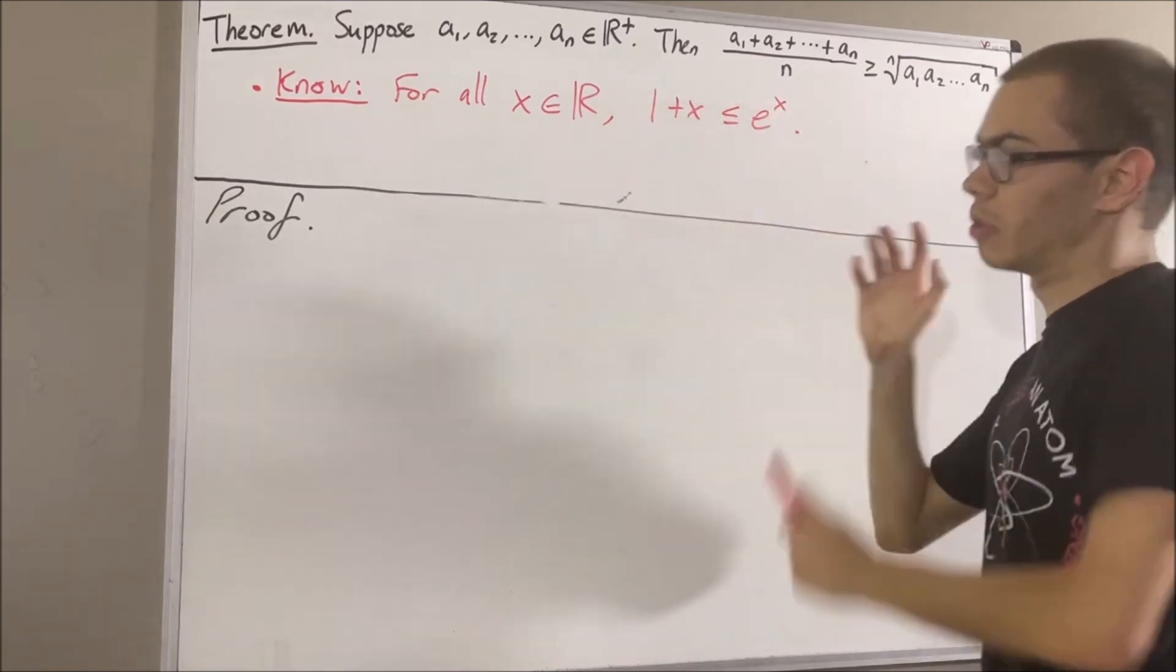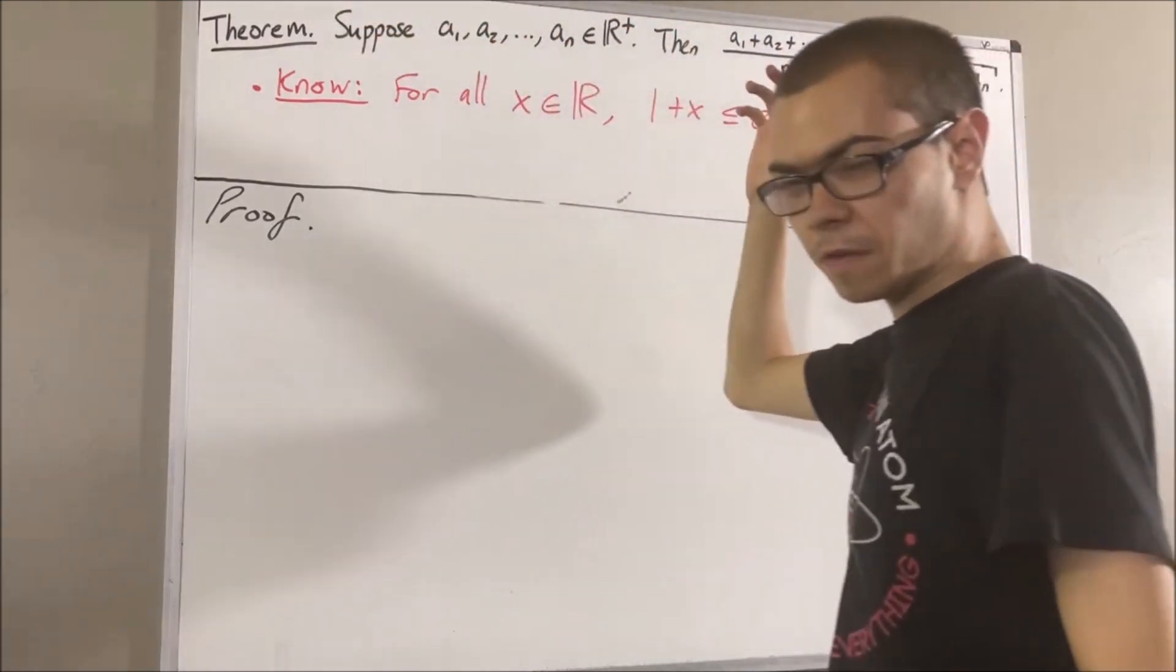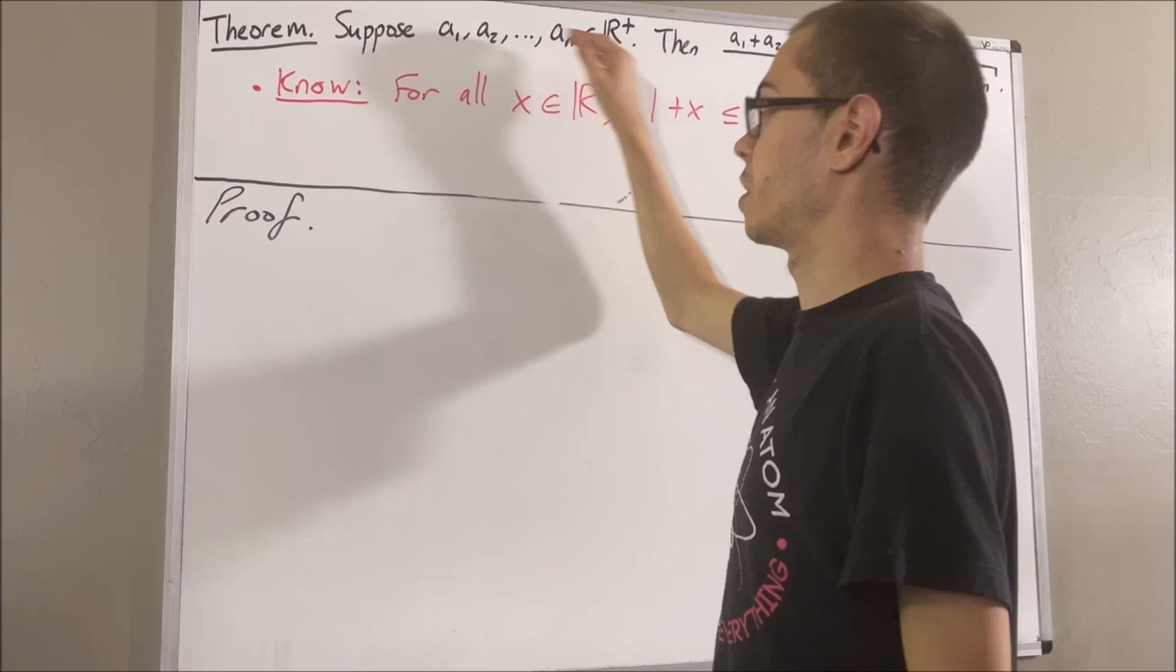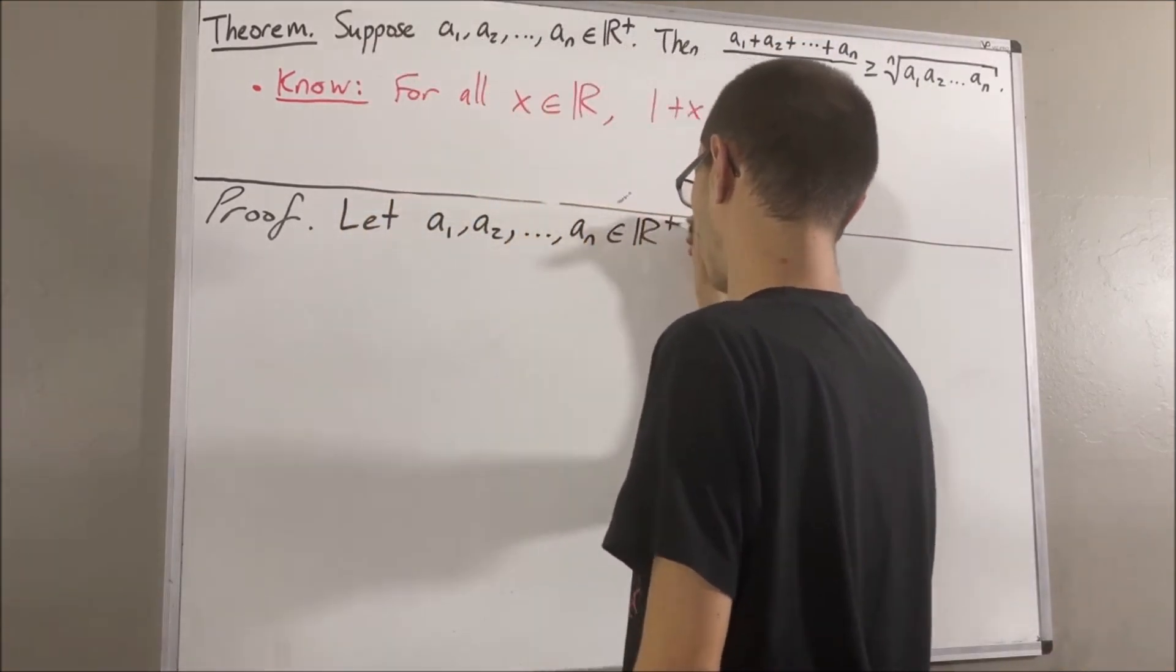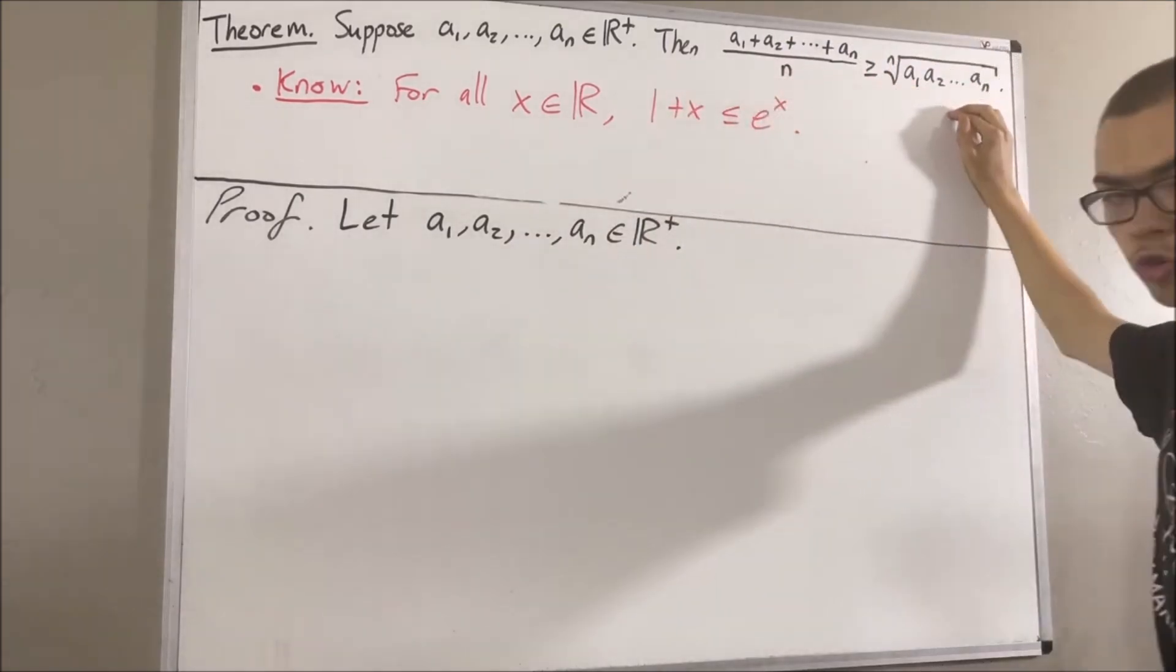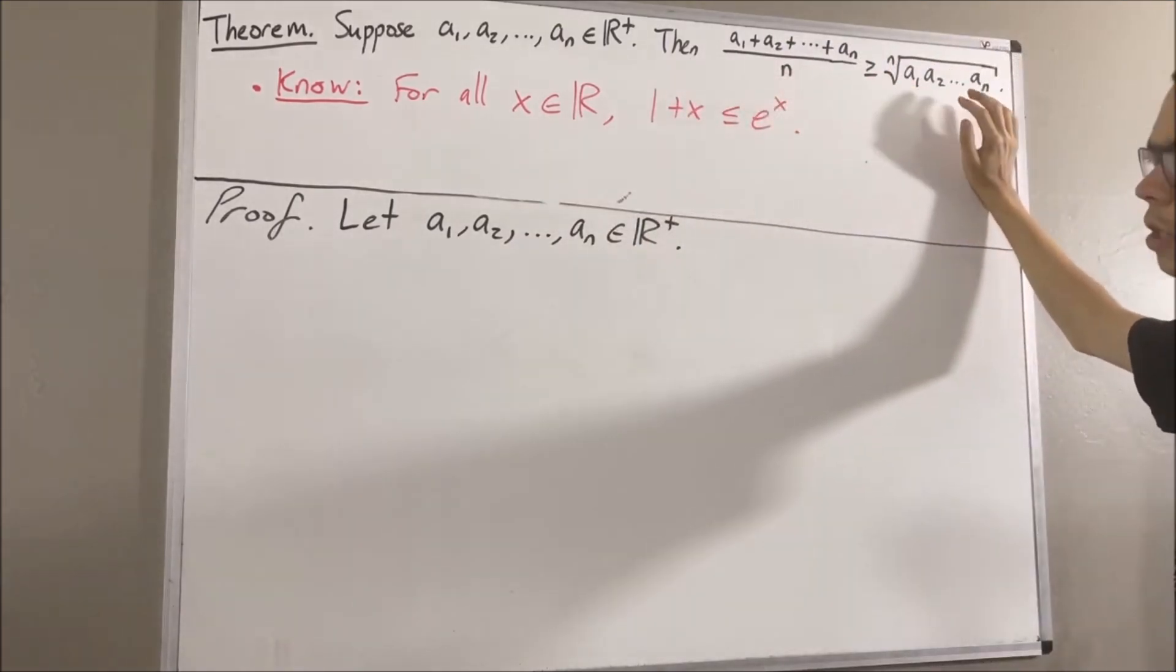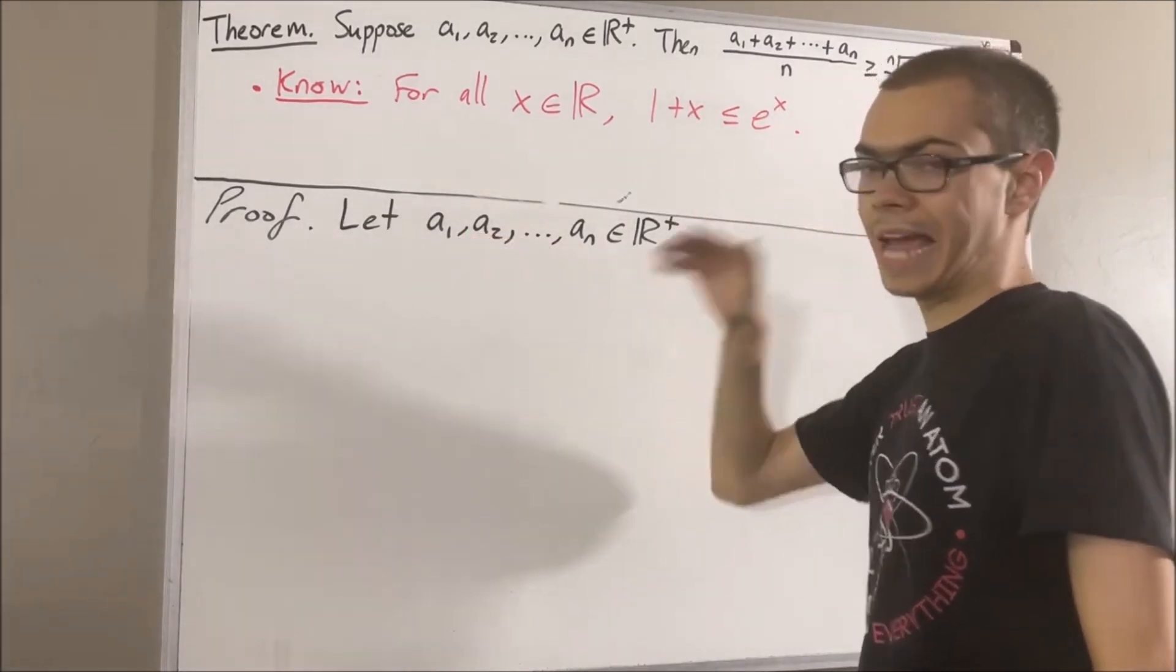Okay, so let's get into proving this theorem. Start out, let's give ourselves a list of positive real numbers a1 through an. The whole goal is to prove that this inequality is true. Now, let's denote the arithmetic mean of this list by capital A.